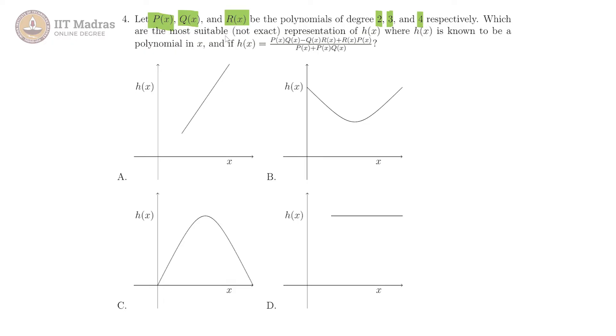Which are the most suitable although not necessarily exact representation of h of x where h of x is a polynomial and it is given as p of x into q of x minus q of x into r of x plus r of x into p of x divided by p of x plus p of x into q of x.